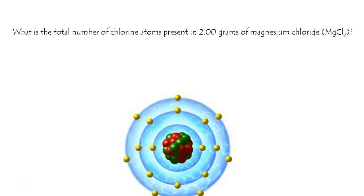What is the total number of chlorine atoms present in 2 grams of magnesium chloride? They want chlorine atoms, and that's a few steps here.